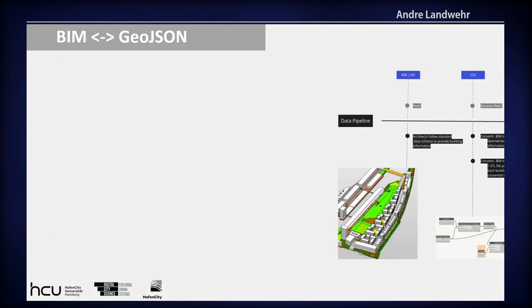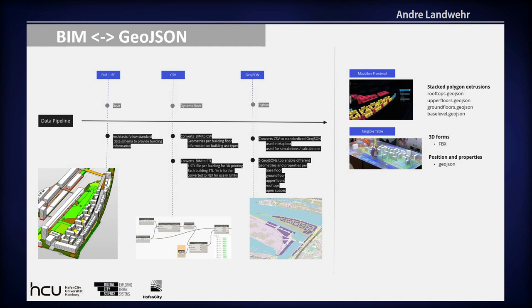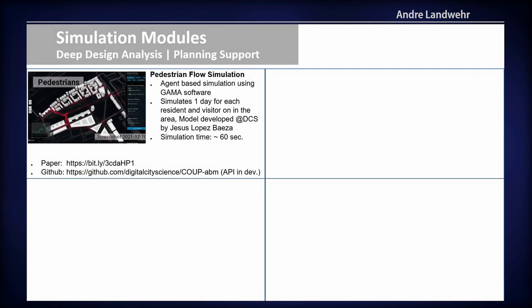So we could show them on the map and also use them for our simulation calculations. The simulation modules — we have several of them. The pedestrian flow simulation is an in-house developed agent-based simulation based on GAMMA.